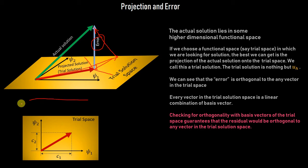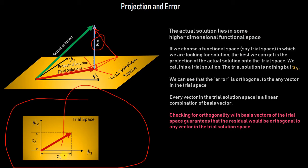In a top view, C₁ and C₂ represent how much ψ₁ and ψ₂ we want to use. The trial solution (red arrow) is the projected solution made up of C₁·ψ₁ and C₂·ψ₂. Our only target is to find C₁ and C₂, and we have one condition established: the error should be orthogonal to the basis functions of the trial space.